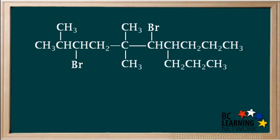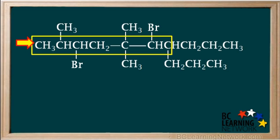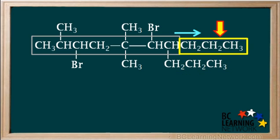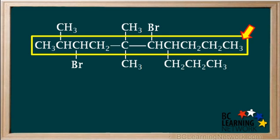We start by selecting the longest continuous chain of carbon atoms, starting from the left side. When we get to a branching carbon atom, we have to decide whether to keep going to the right or to make a short turn downward. Going downward adds three more carbons, but going straight to the right also adds three more carbons, so it doesn't matter which way we go. Counting the carbon atoms in this chain, you'll see there are ten, so the name ends in decane for the alkane with ten carbons.